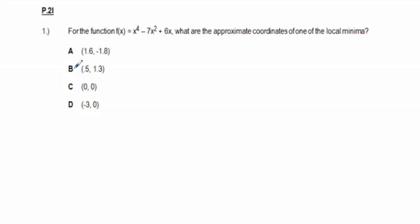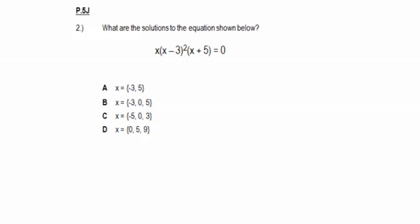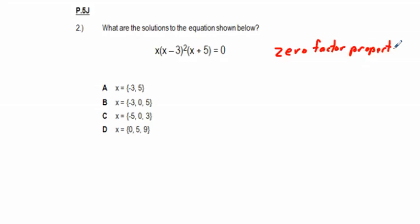That closely matches answer choice A, which we circle as our correct answer. Next, problem 2: what are the solutions to the equation x(20x - 3)²(20x + 5) = 0? Because of the zero factor property, we're going to use it to solve this one. The zero factor property simply states that anything times zero equals zero.